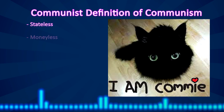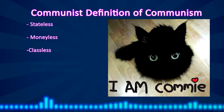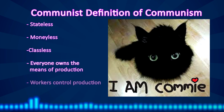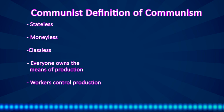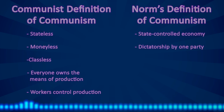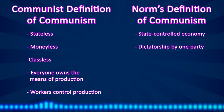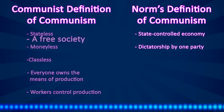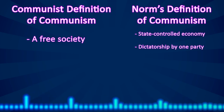Communists define communism as a society that is stateless, moneyless, and classless, where everyone owns the means of production and workers control production. This idea of communism is extremely different from the system that existed in the Soviet Union and in other countries governed by a communist party. Most people think of communism as a highly authoritarian society, but communists define communism as exactly the opposite — a free society, with no state apparatus, no authoritarian control. A society of freedom.